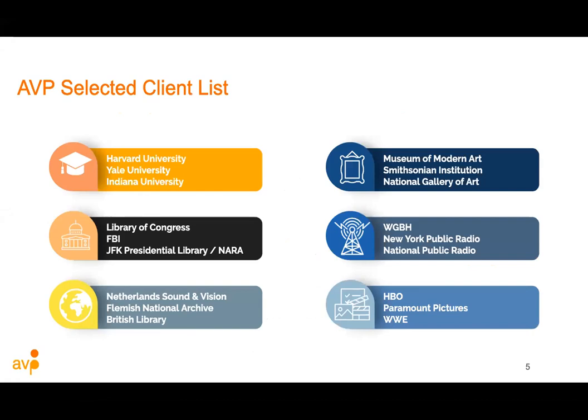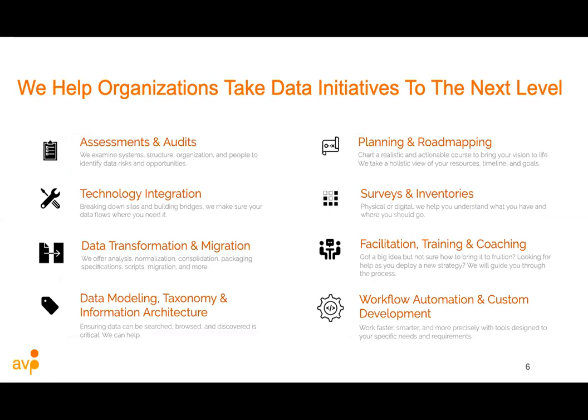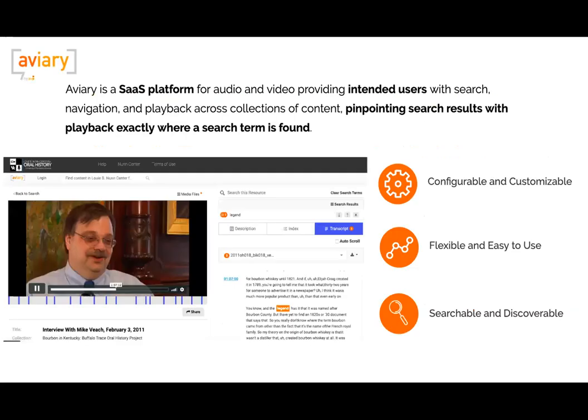AVP is largely a consulting and strategic planning organization, doing work around assessments, audits, technology integration, planning, data migration, and data transformation. Over the past five or six years we've also developed into a software development company because of our work with data and software — specifically growing out of digital preservation work. Today I'm here to talk about Aviary, one of AVP's software products: a Software as a Service platform built alongside our partners at Yale University and the Fortunoff Archive.